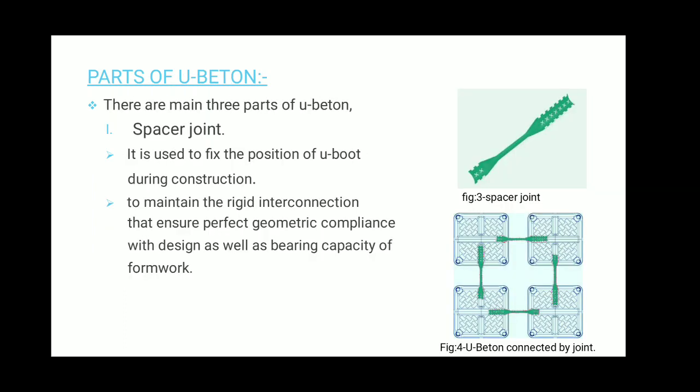There are three parts of U-Boot. The first is the spacer joint. It is used to fix the position of U-Boot during construction to maintain rigid interconnection, ensuring perfect geometric compliance with the design as well as the bearing capacity of the formwork. You can see on the top right side the spacer joint, which is used to connect the U-Boots together for their rigidity.